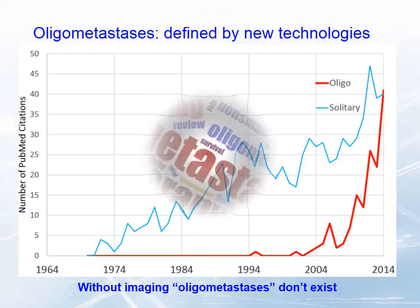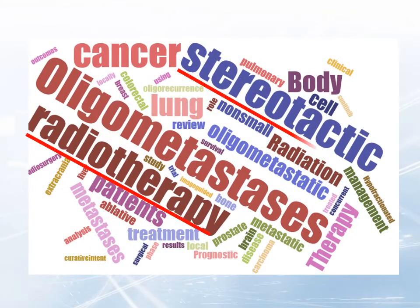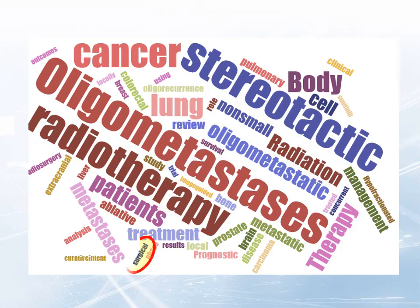I created a word cloud looking at the 50 most common words that appeared in all the manuscripts referring to oligometastatic disease. It was clear that stereotactic radiotherapy was the key player. Surgery, although it's probably still the primary treatment for oligometastases, features much less in the literature. And perhaps more worryingly, survival doesn't feature very prominently at all.